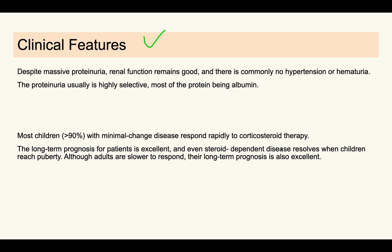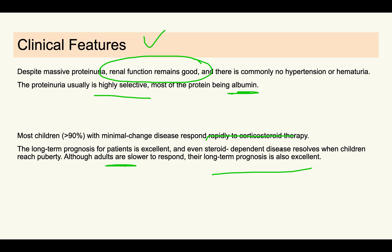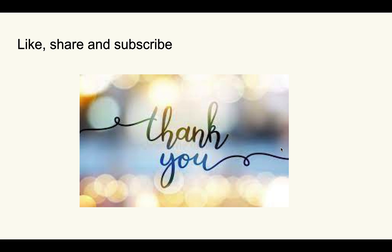The prognosis of minimal change disease is very good because the patient responds very nicely to corticosteroid therapy. Even if the patient remains corticosteroid-dependent, in children the disease automatically resolves when they reach puberty. In adults the prognosis is less favorable than in children, but the long-term prognosis remains very good. Important points: renal function always remains good, proteinuria is highly selective with only albumin being excreted, and the disease responds very well to corticosteroids.